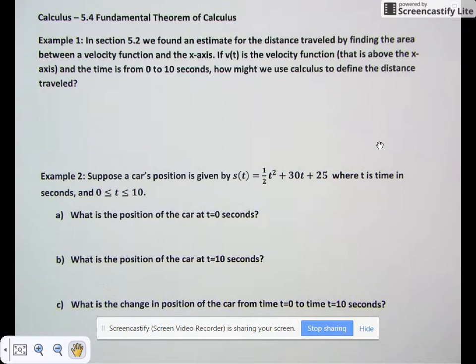Our first example: In section 5.2 we found an estimate for the distance traveled by finding the area between a velocity function and the x-axis. If v(t) is the velocity function that is above the x-axis and the time is from 0 to 10 seconds, how might we use calculus to define the distance traveled?